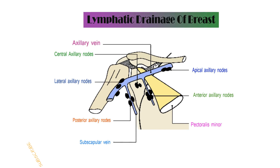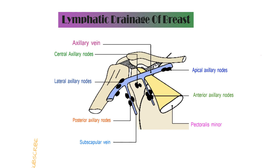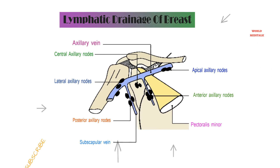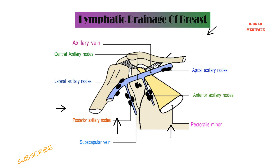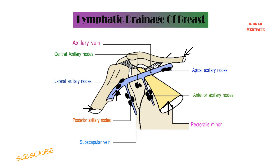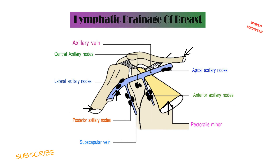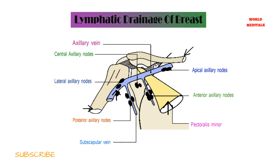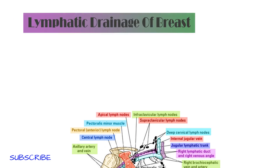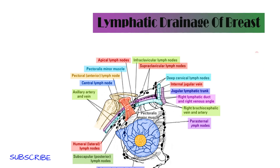To talk about the lymphatic drainage of the breast, we have to first identify five structures: the clavicle, humerus, sternum, pectoralis minor muscle, and the axillary vessels and their locations. Then we will talk about the location of the lymph nodes.